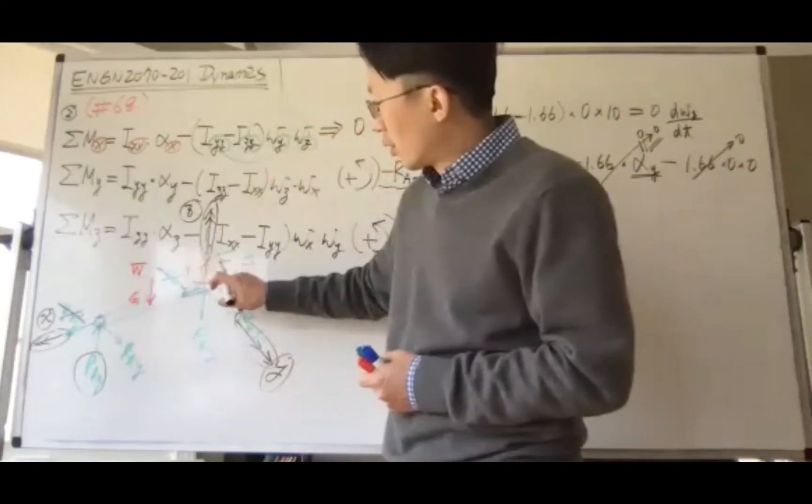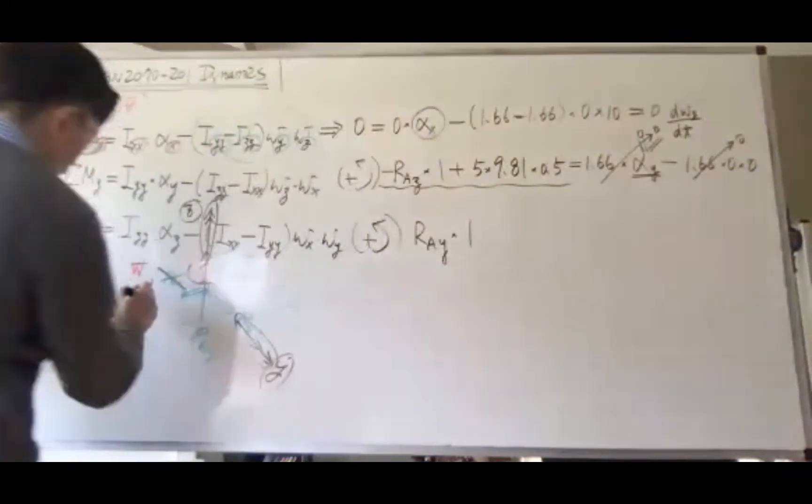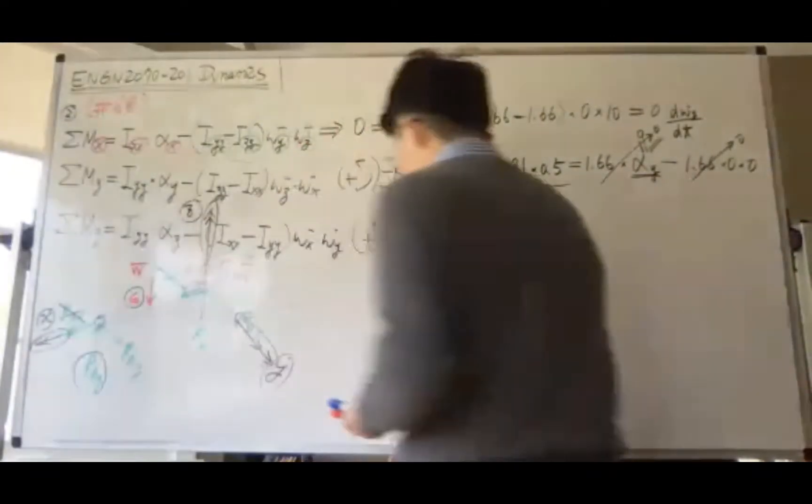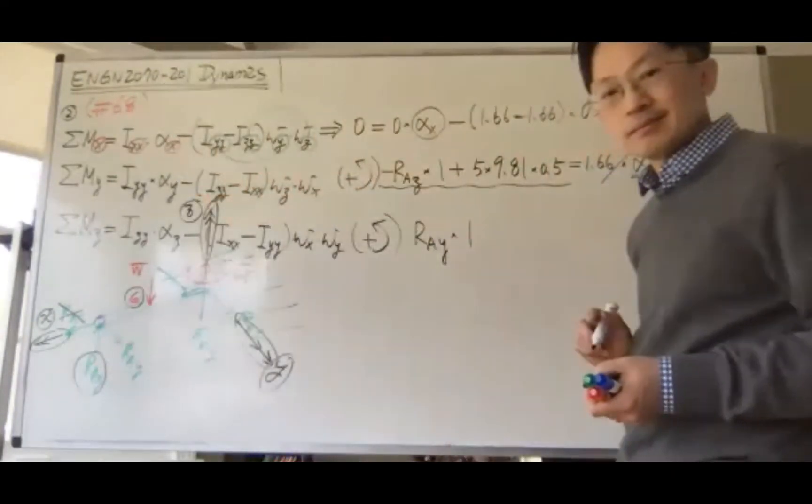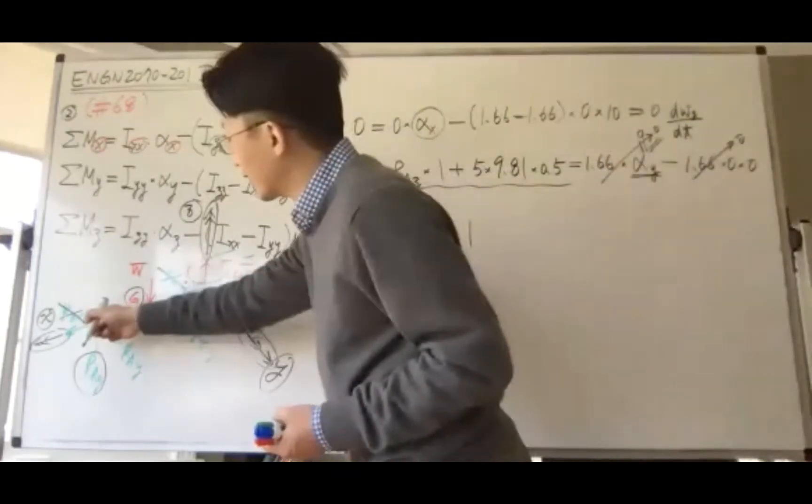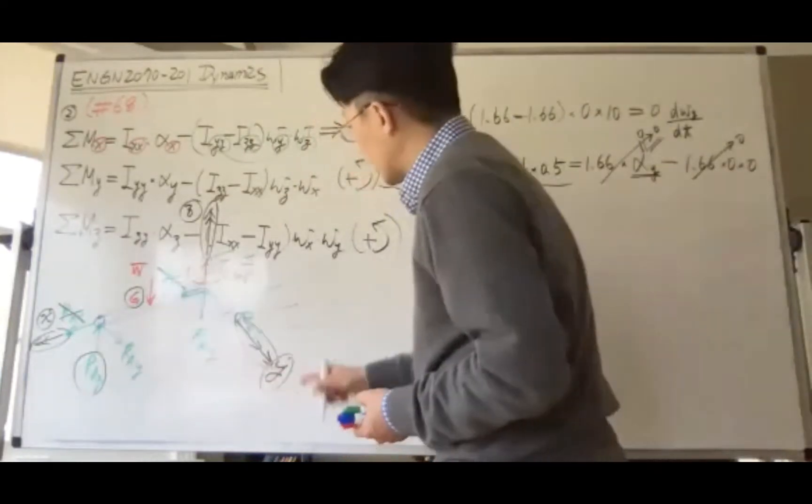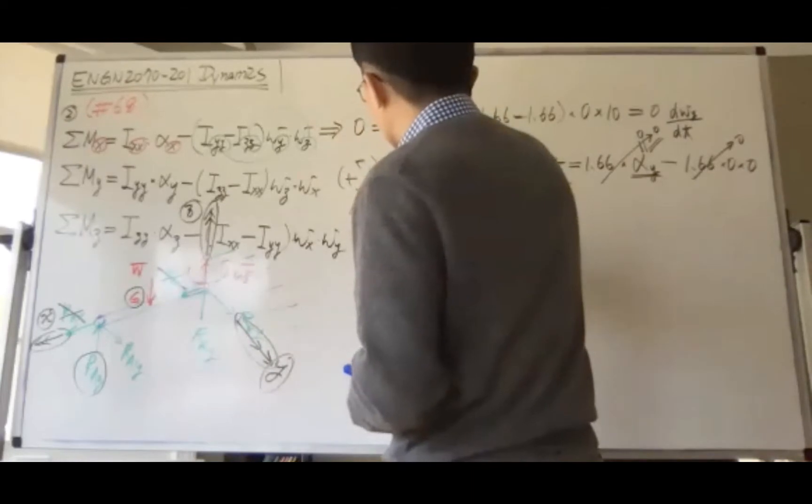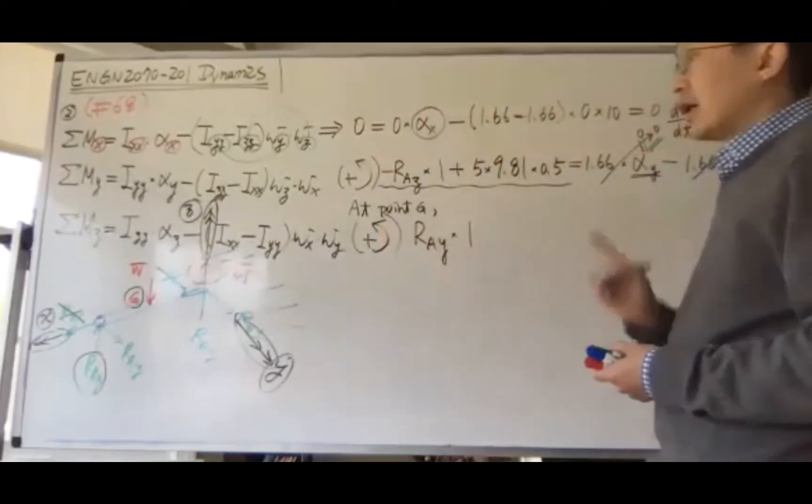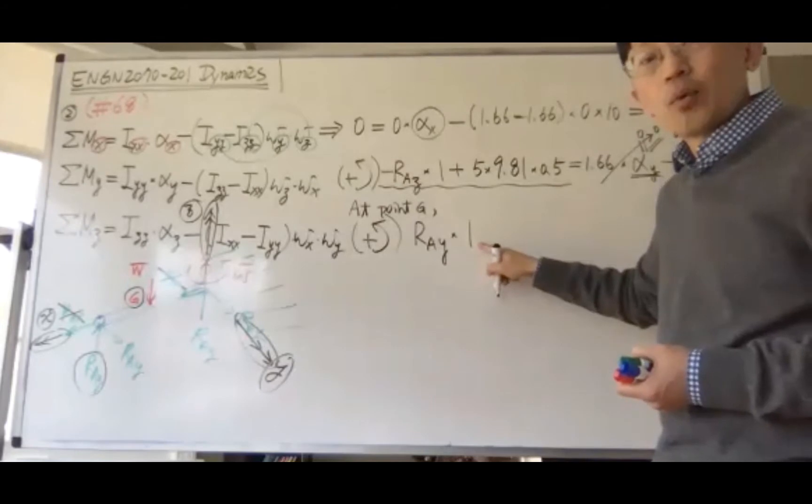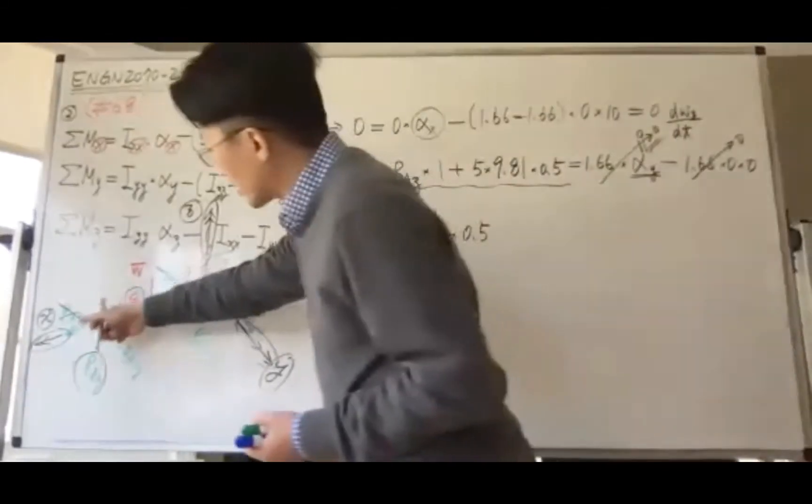For the z-component moment equilibrium, we'll take it at the center of gravity. If you do this, you can consider all three together. For other components, take the moment equilibrium at point G. At point G, the distance is no longer one meter but 0.5 meters, and this will produce positive moment.